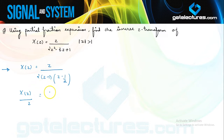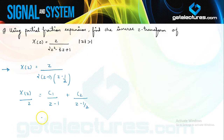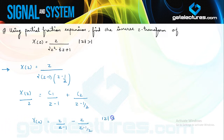I am going to express this in the form C1 upon (Z − 1) plus C2 upon (Z − 1/2). You can easily find values of C1 and C2 — we have practiced this a lot of times. Writing the values directly: X(Z) can be written as Z upon (Z − 1) minus Z upon (Z − 1/2), with ROC mod Z greater than 1.